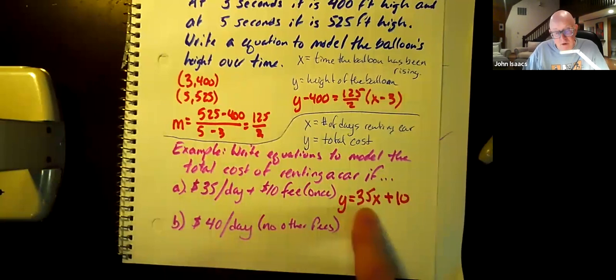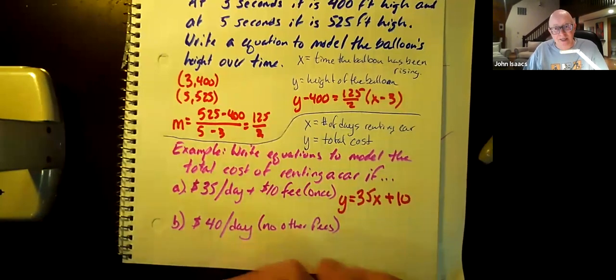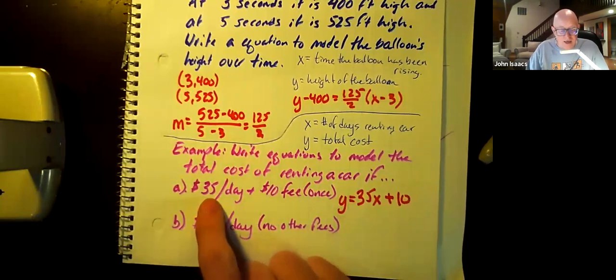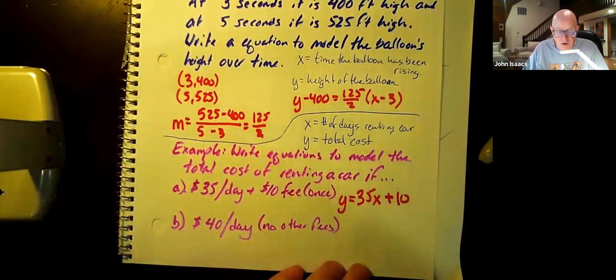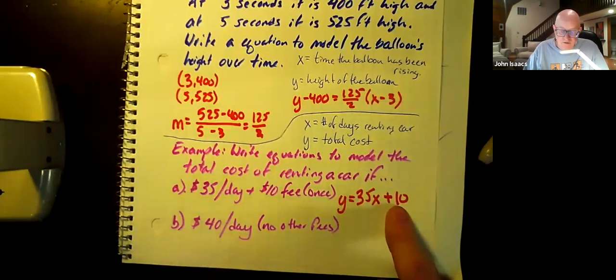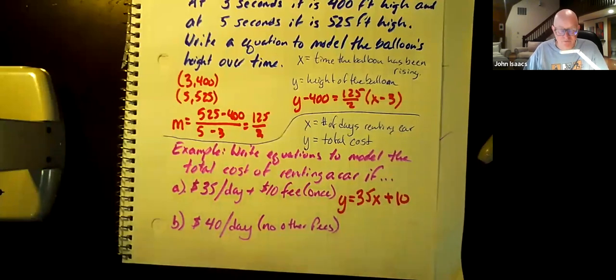So these equations in slope intercept form are pretty easy to write. You have an initial cost and something that happens repeatedly. The something that happens repeatedly, the $35, needs to be multiplied because it happens repeatedly. Literally, multiplication is repeated addition. You're going to be adding up these $35 multiple times, depending on how many days you rent the car. Whereas the addition of $10 happens once. That's kind of an initial fee. So this becomes an initial value and this becomes a repeated value.